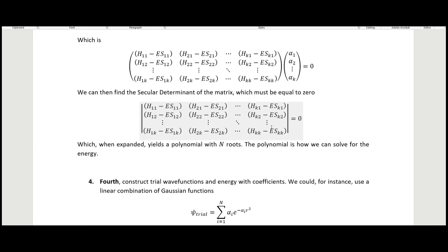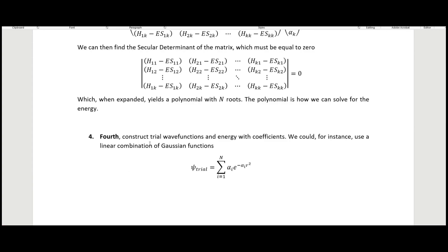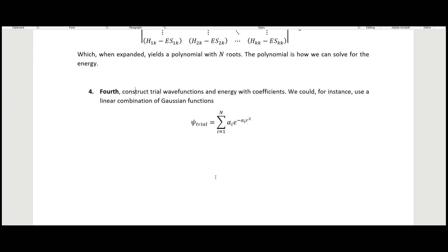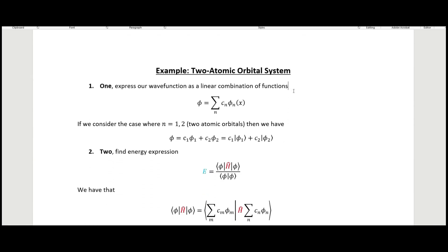Taking the determinant gives us a polynomial with n roots, which we can use to solve for the energies. We then construct the trial wave functions and energies using the coefficients just calculated. For example, one could use a Gaussian function, though that is very complicated and is usually done with computers.